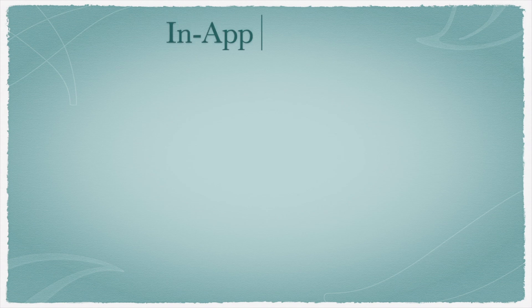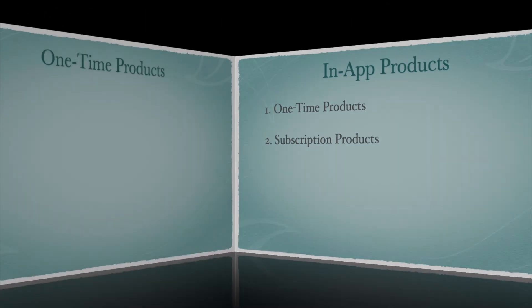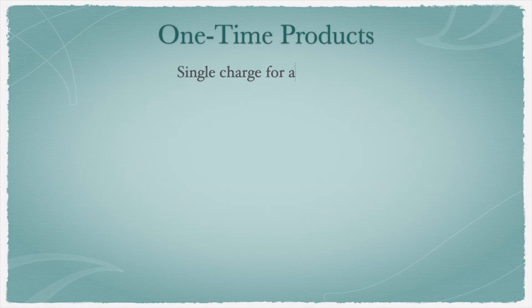Now let's see what are the different types of in-app products that we can offer in our Android apps. In-app products fall into two main categories: one-time products and subscription products. A one-time product can be purchased with a single charge to the user's payment method. Examples include additional game levels, unlocking new features, and downloading media content.